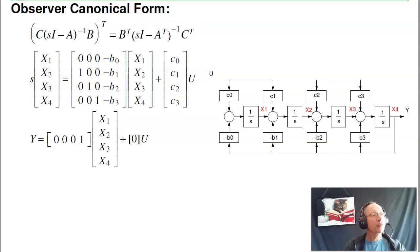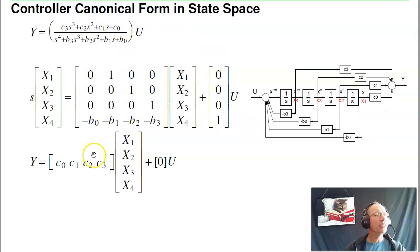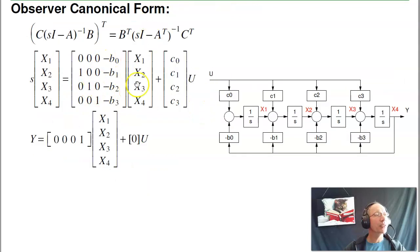Second form, observer canonical form. The transfer function, assuming d is zero, is csi minus a inverse b. If I were to transpose this, this is still a scalar, still a valid transfer function. When you transpose this guy, I get b transpose si minus a transpose inverse c transpose. So b goes to c, c transpose goes to b, and a transpose goes to a. This is another perfectly valid way to represent it.